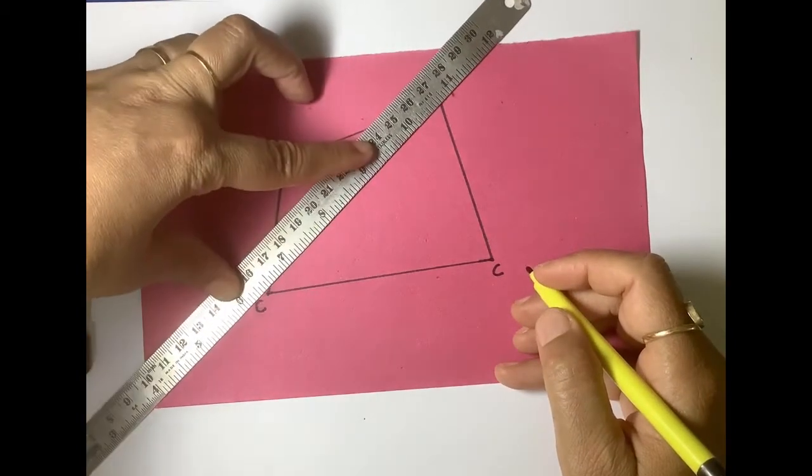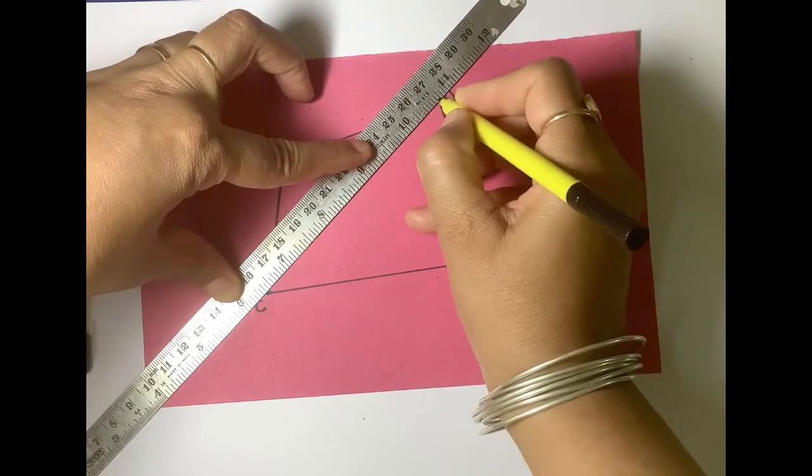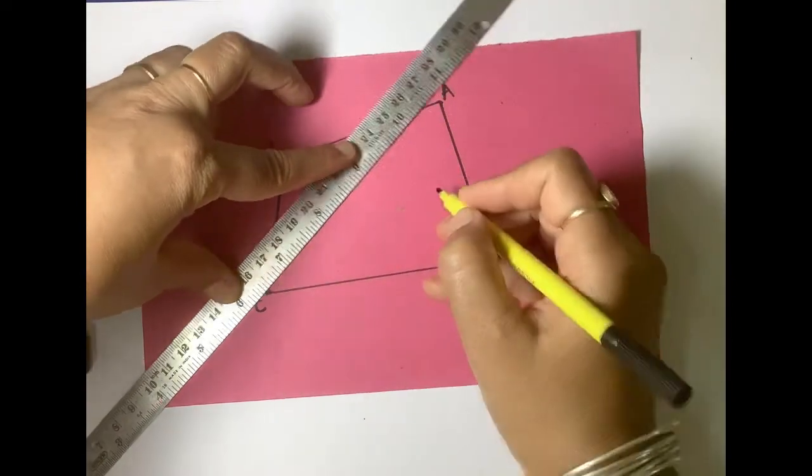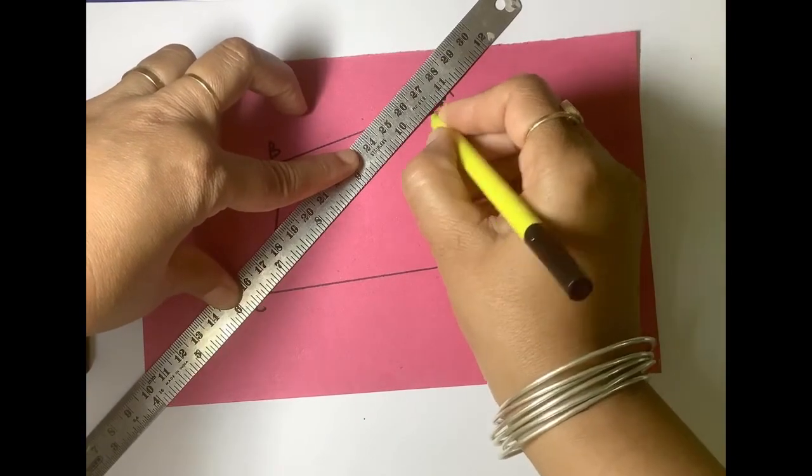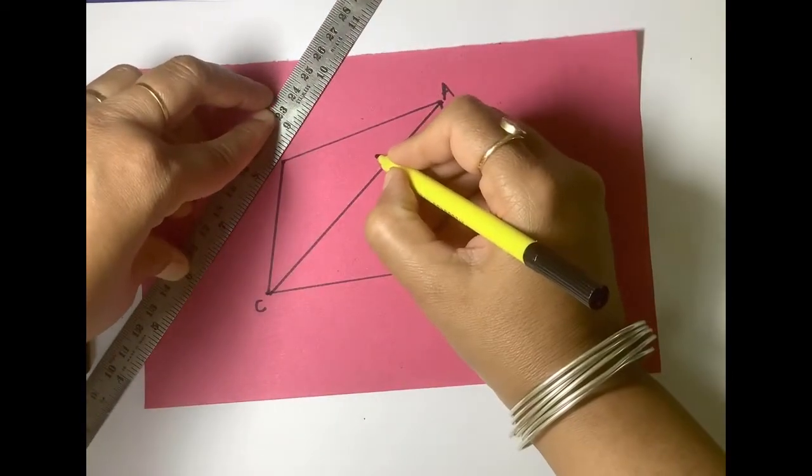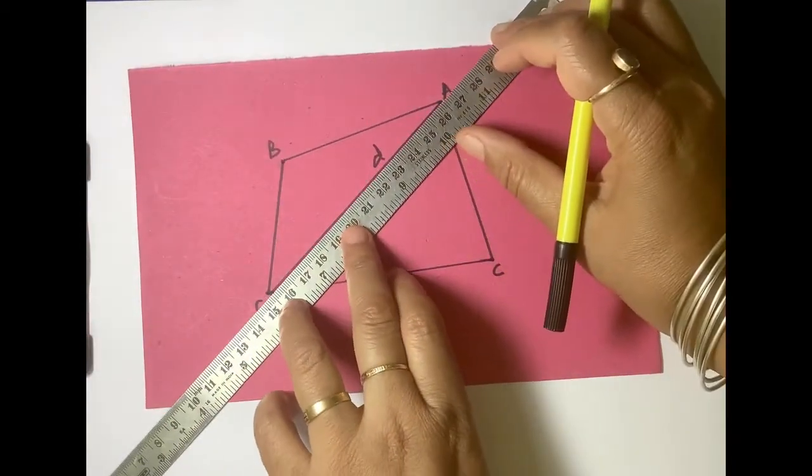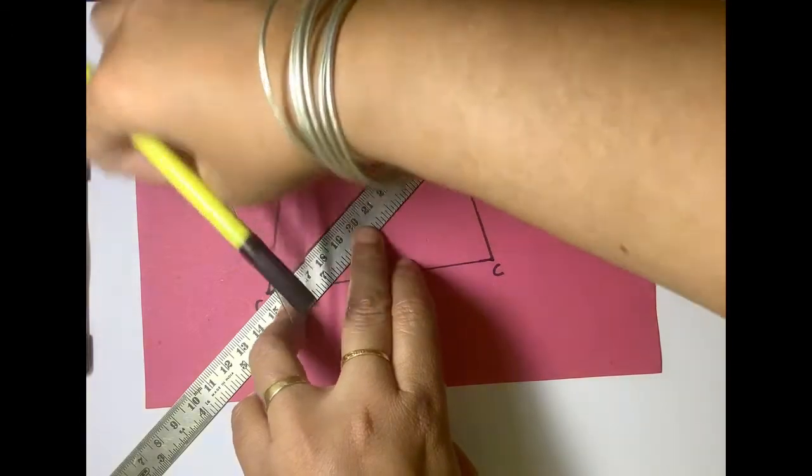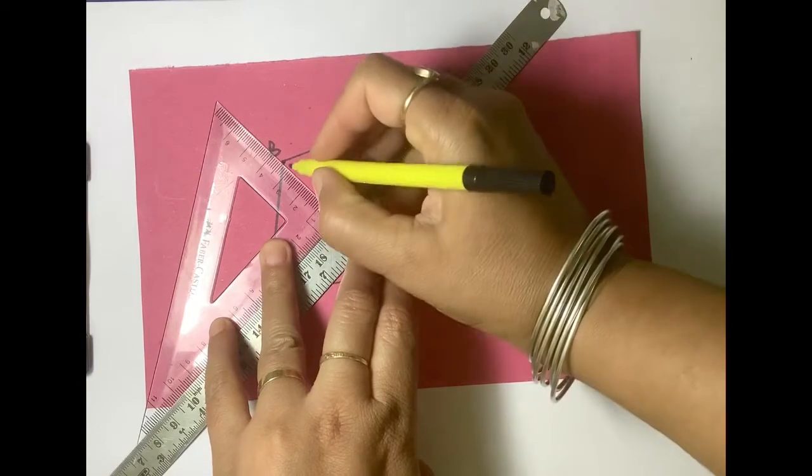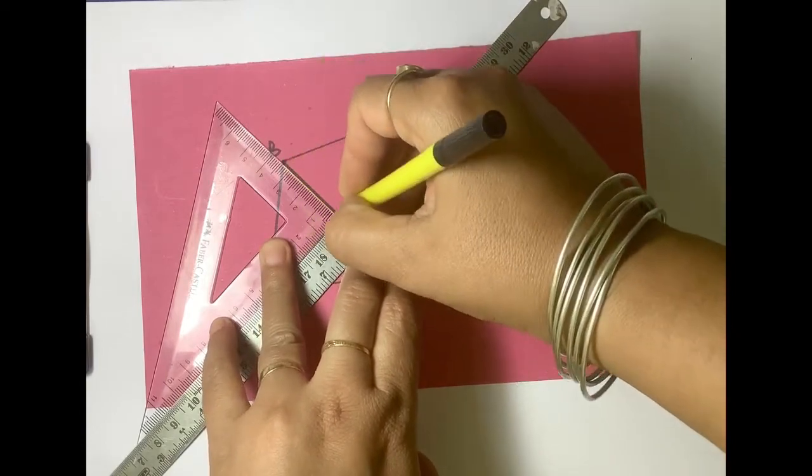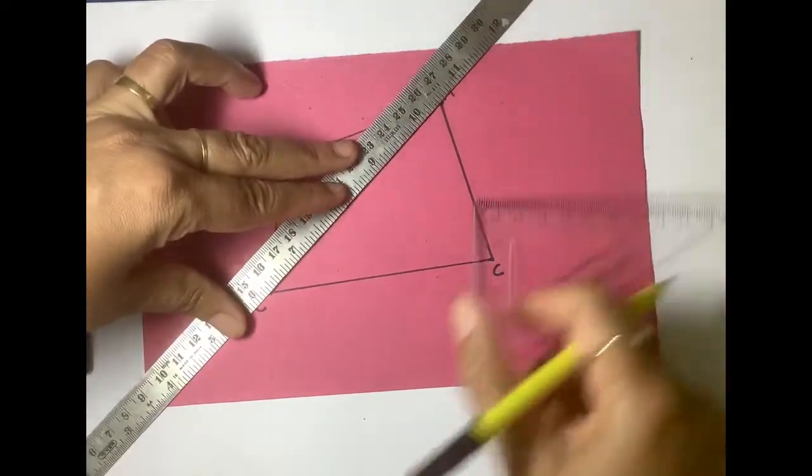Now join any one of the diagonals. Let us join AC and name this diagonal as D. Now we draw a perpendicular from opposite vertices. This perpendicular is called offset.